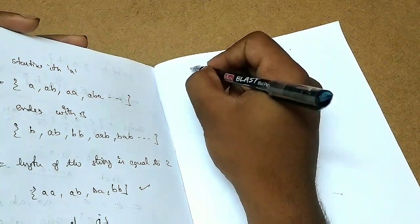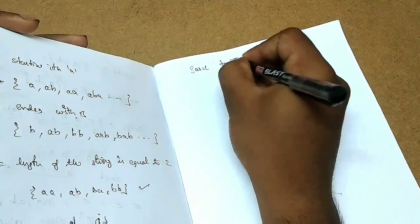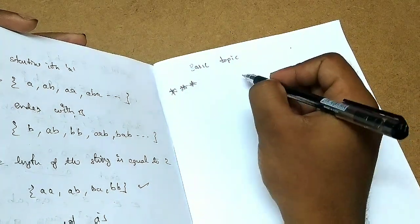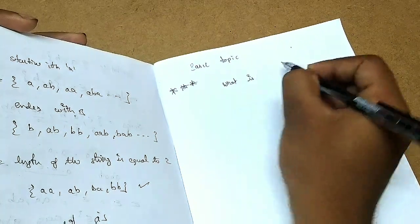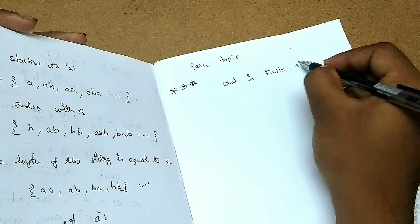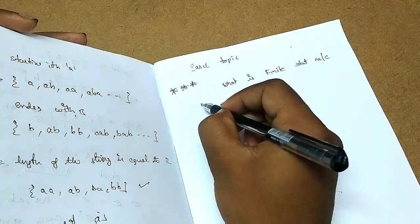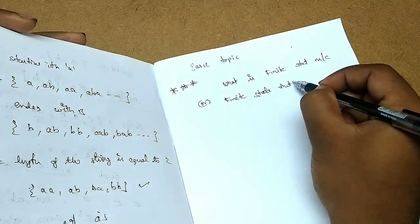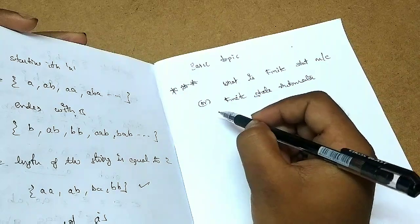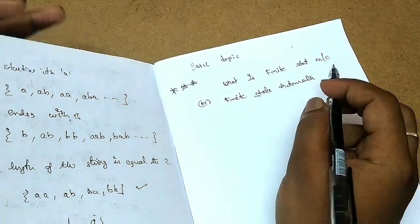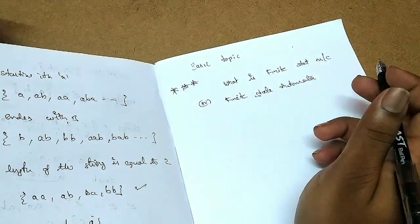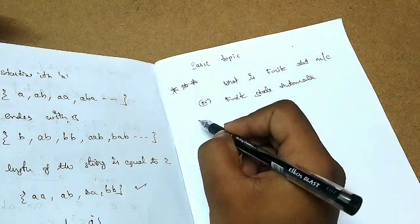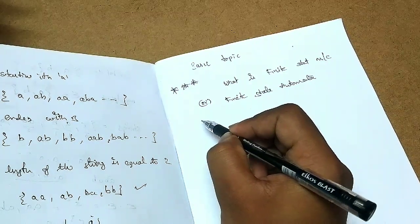Now we are dealing with a very important basic topic and very important question in descriptive exams also. That is, what is finite state machine or finite state automata or simply automata, sometimes they will be called as state machine. Whatever it is, there are many names but the concept is same. First we will start with the definition then we will go to the things.